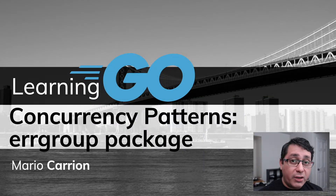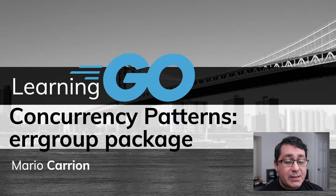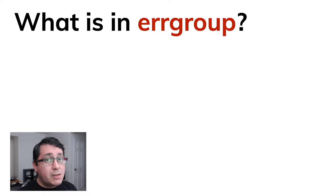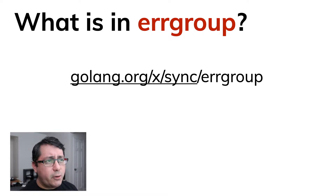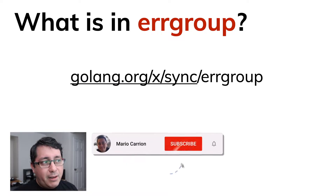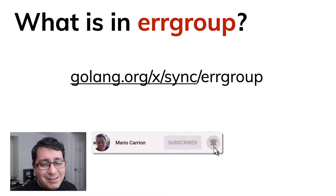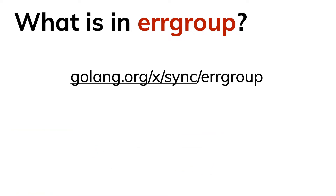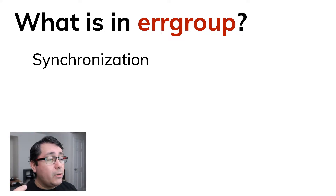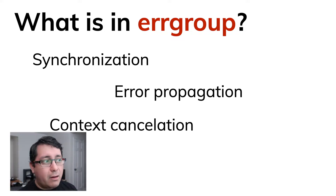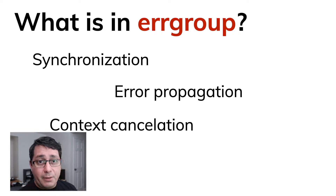Hello, my name is Mario, welcome to another learning Go video. In today's episode we're going to be discussing concurrency patterns, specifically about the error group package. The error group package is not part of the standard library — it's a third-party package that you need to import, but it is supported by the Go team. It's part of the golang.org/x/sync package group, a subgroup called error group, and it includes a way to synchronize, propagate errors, and cancel using the context type covered in previous episodes.